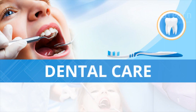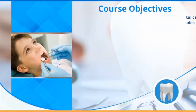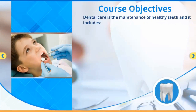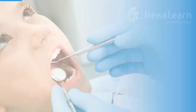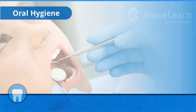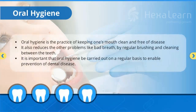Dental care course objectives. Dental care is the maintenance of healthy teeth and it includes oral hygiene, dentistry, and oral surgery. Oral hygiene is the practice of keeping one's mouth clean and free of disease. It also reduces other problems like bad breath. It is important that oral hygiene be carried out on a regular basis to enable prevention of dental disease.